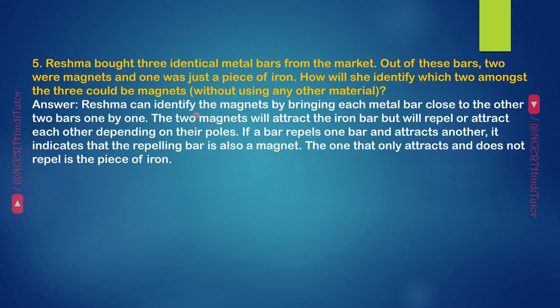Answer: Reshma can identify the magnets by bringing each metal bar close to the other two bars one by one. The two magnets will attract the iron bar, but will repel or attract each other depending on their poles. If a bar repels one bar and attracts another, it indicates that the repelling bar is also a magnet. The one that only attracts and does not repel is the piece of iron.